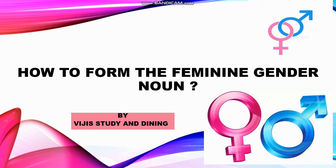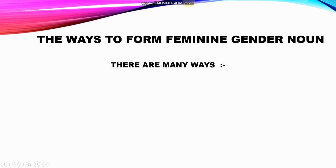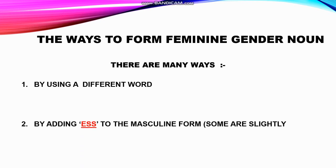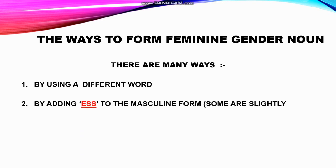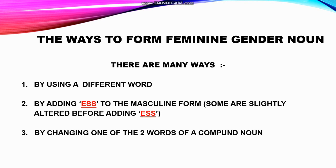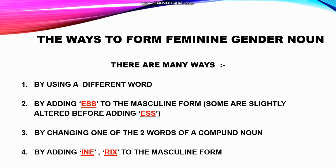Welcome back everybody to VG Study and Dining. Last time we covered gender nouns and promised a continuation on how to change masculine gender to feminine gender. Today we'll look at how to form the feminine gender noun. There are many ways to do this: by using a different word, by adding ESS to the masculine form, by slightly altering the word before adding ESS, by changing one word of a compound noun, or by adding INE or RIX to the masculine form.